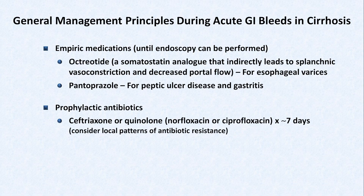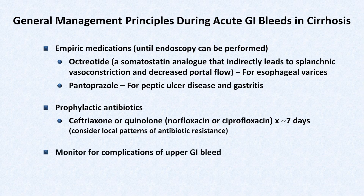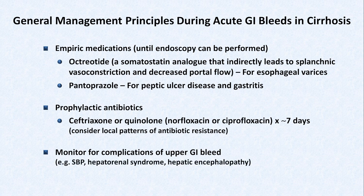In addition to empiric and prophylactic medications, also monitor for common complications of an acute upper GI bleed. Upper GI bleeds can trigger the other three big acute complications of cirrhosis: SBP, hepatorenal syndrome, and hepatic encephalopathy. And last, of course, these patients all require emergent endoscopy.